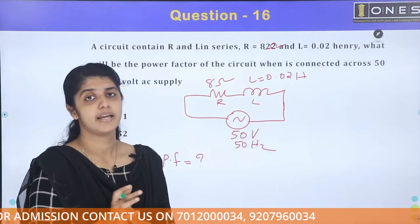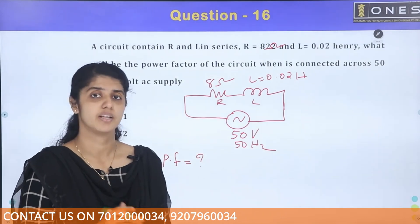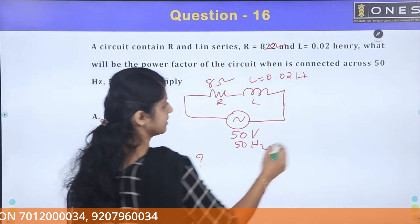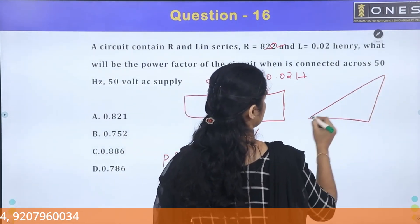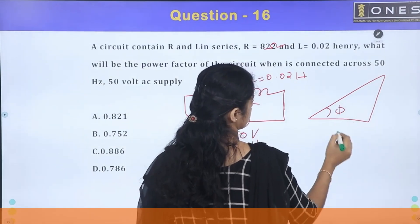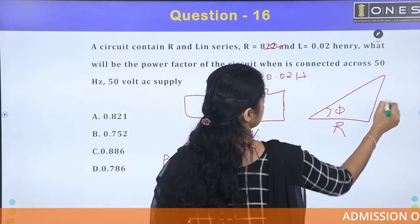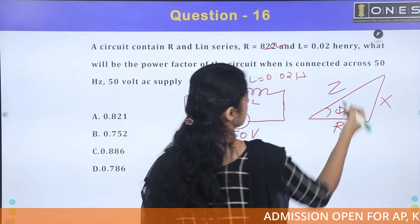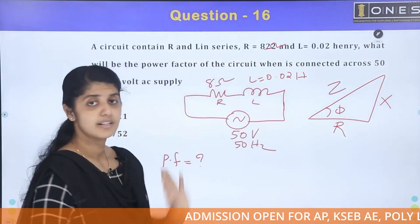Using the impedance triangle, the power factor is equal to R divided by Z.